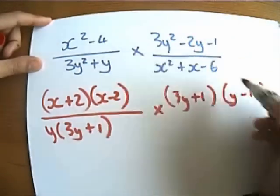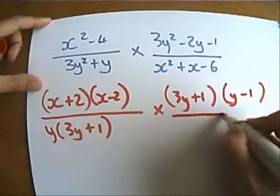Minus 3y plus y gives me minus 2y, plus 1 times minus 1 is minus 1, brilliant, write that over there.